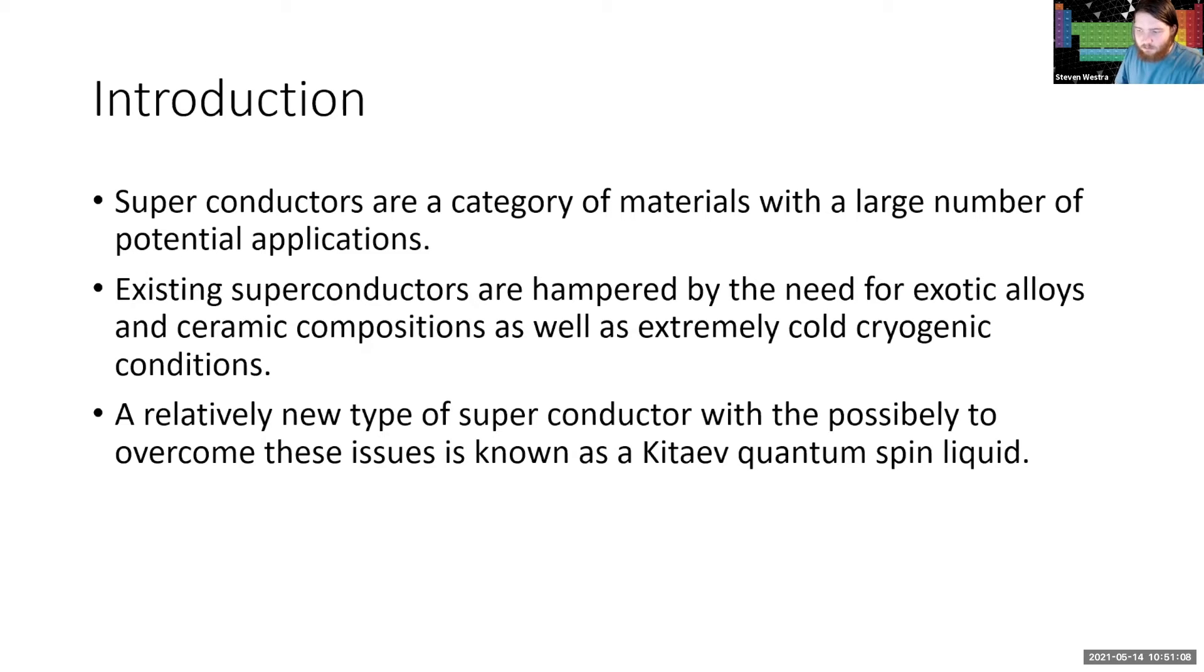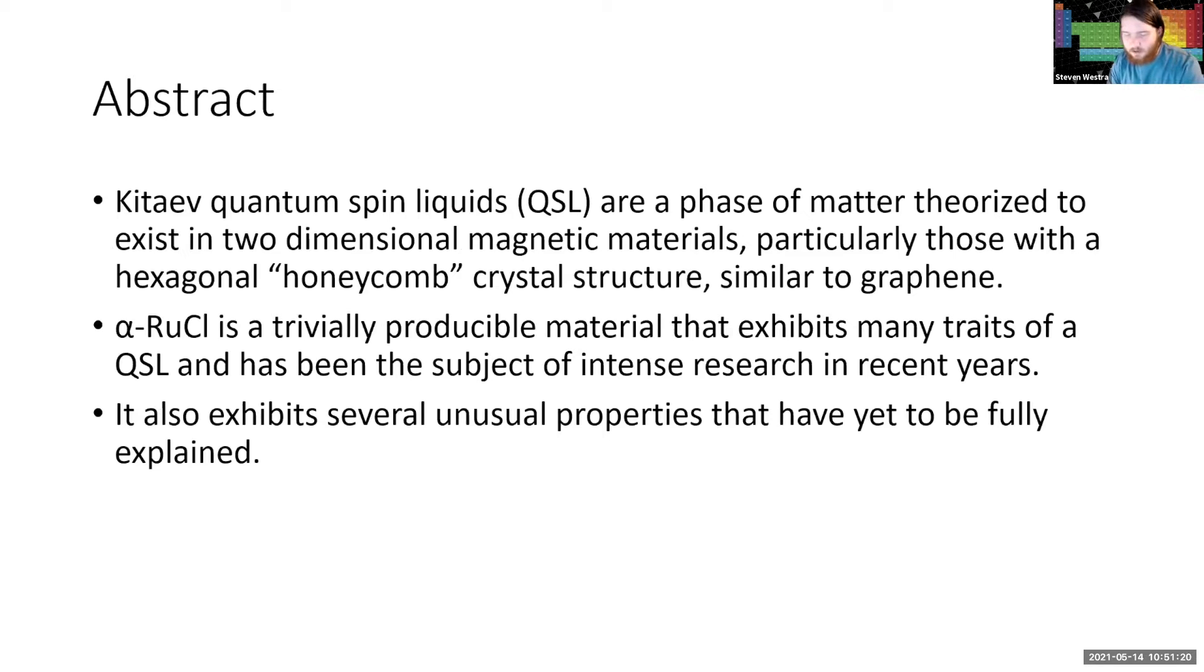A relatively new type of superconductor that has the possibility to overcome a number of these issues is known as a Kataev quantum spin liquid. A Kataev quantum spin liquid is a phase of matter that is theorized to exist in two-dimensional magnetic structures, particularly pronounced in those that have a hexagonal or honeycomb crystal structure similar to what you would see with graphene. Alpha-ruthenium chloride is of particular interest in that it strongly exhibits many traits that are found that were thought to be indicative of this type of phase of matter. It is relatively trivial to produce and also individually exhibits many unusual properties that have yet to be fully explained in published literature.